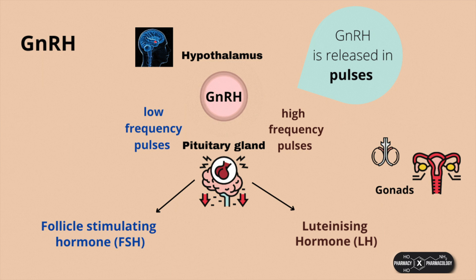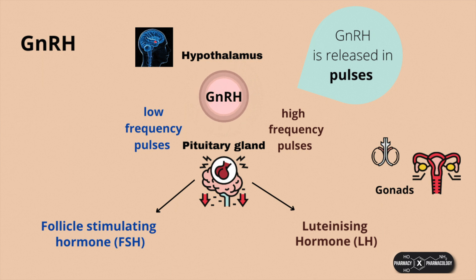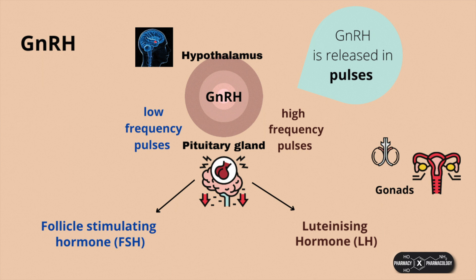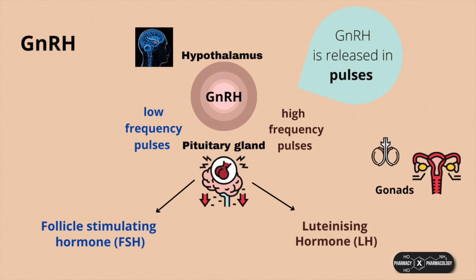A key feature of GNRH is that it is released in pulses. When it is in slow pulse mode, it triggers the pituitary to release FSH. And when it is in fast pulses, this makes the pituitary release LH.